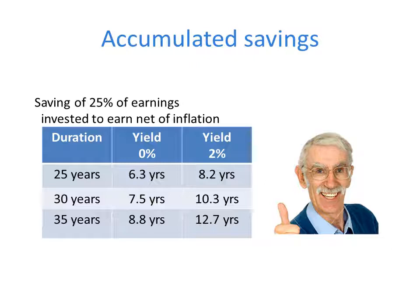This table shows a regular saving of 25% of earnings over a working career. The amount you get at the end of 35 years depends on your yield, shown here after deducting inflation. Most people get a yield that just matches inflation, and at the end of 35 years their savings amount to 8.8 years of income at retirement. But if they earn 2% higher than inflation, the savings become 12.7 years — about 50% higher. So it is very important that you aim to earn 2% above inflation.